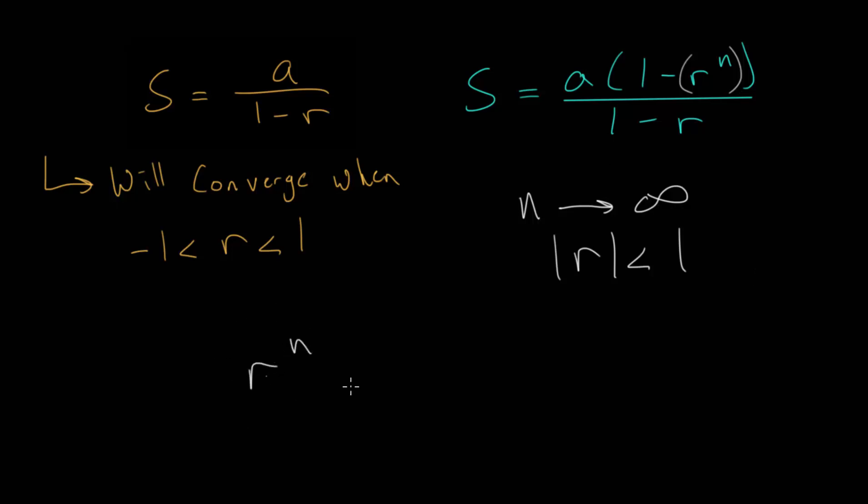So we want to consider r to the n when the absolute value of r is less than one, or when r is a fraction between minus one and one. We're not going to get too far into this, since really this is a topic for calculus. But we do want to be able to think it through, because it does make intuitive sense what's going to happen to it.